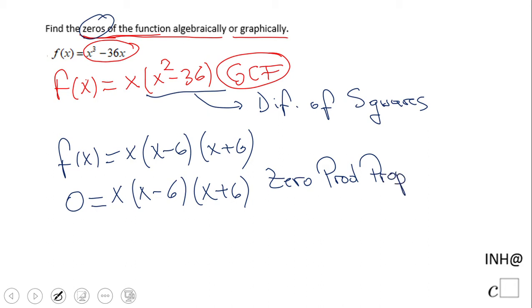property, which means every single factor needs to equal zero. The first factor is x, so x equals zero for this polynomial. The second factor is x minus 6, which is going to make it